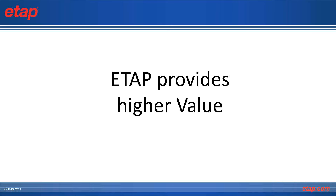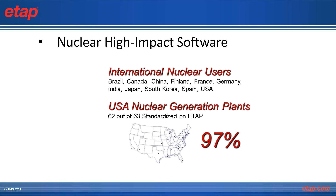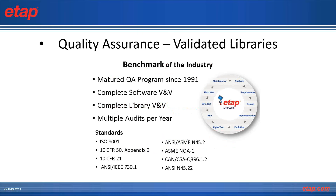To begin, I'd like to go over an overview on why to convert. The main reason to think about converting a project is because ETAP provides higher value. ETAP is a nuclear high-impact software used across most nuclear facilities across North America, and it is backed by a quality assurance program.